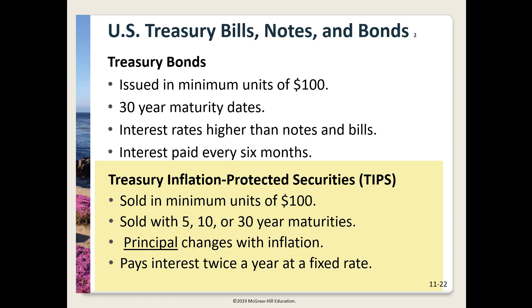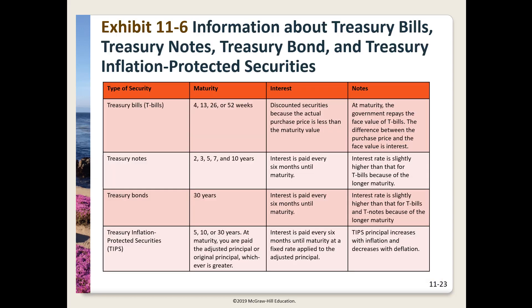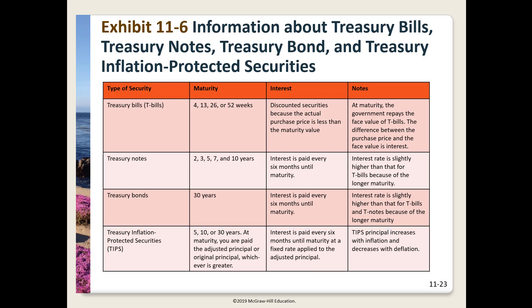TIPS, or Treasury Inflation Protected Securities, are a relatively new offering beginning in 1997. They are sold in minimums of $100, offered with 5, 10, and 30-year maturities, and interest is paid twice a year. Inflation is reflected by the principal changing with inflation, so quotes for outstanding TIPS show both the interest rate and the current principal. Exhibit 11-6 on page 363 recaps all four federal government securities. Any of these can be purchased directly online through TreasuryDirect or through a broker.